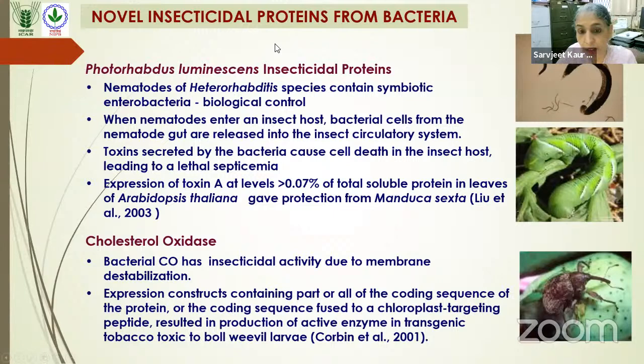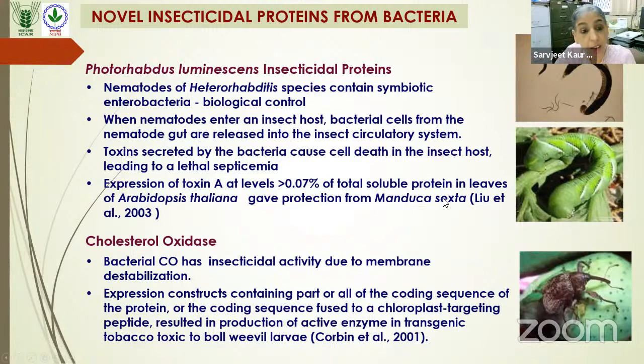There were also some examples of other kinds of insecticidal proteins — for example, from the bacterium Photorhabdus luminescens, which was found to be toxic to Manduca sexta in transgenic Arabidopsis, though not much further progress has been made. Similarly, cholesterol oxidase from bacteria was targeted against boll weevil using chloroplast transformation.